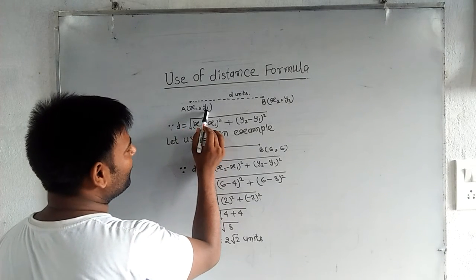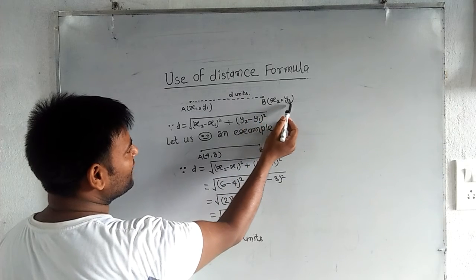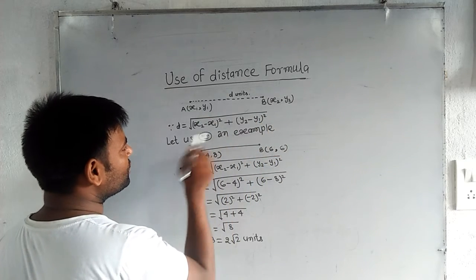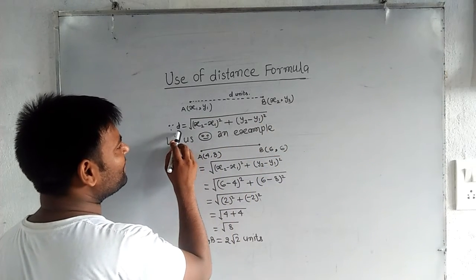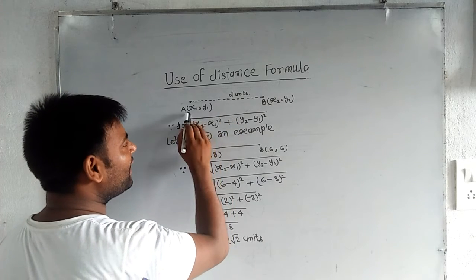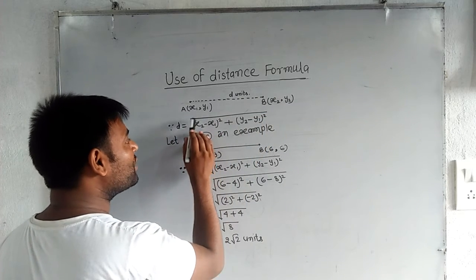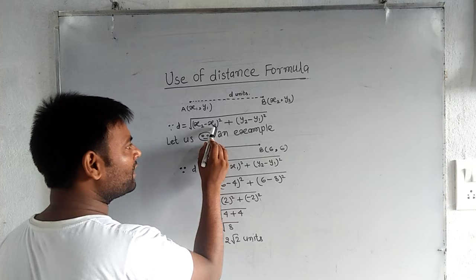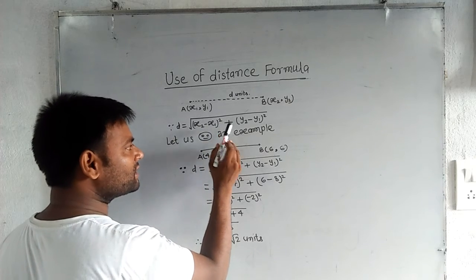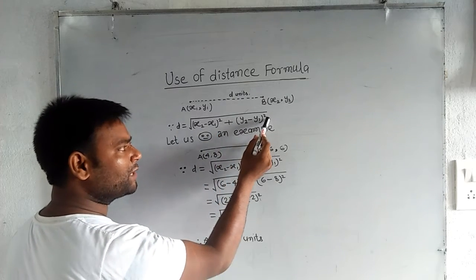We can see here in a plane, A(x1, y1) and B(x2, y2) are two points. So d is equal to, it means that distance between A and B is equal to root under x2 minus x1 to the power 2 plus y2 minus y1 to the power 2.